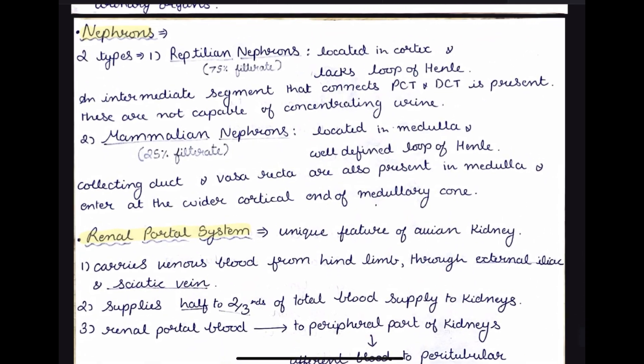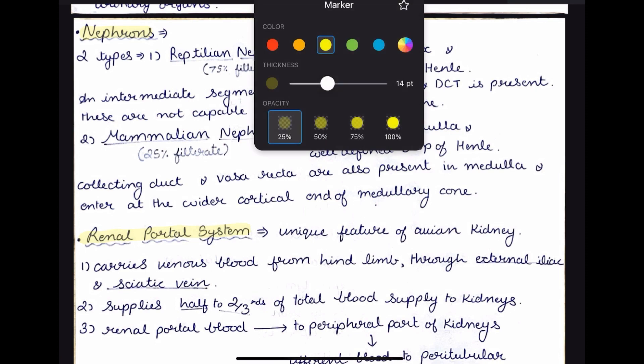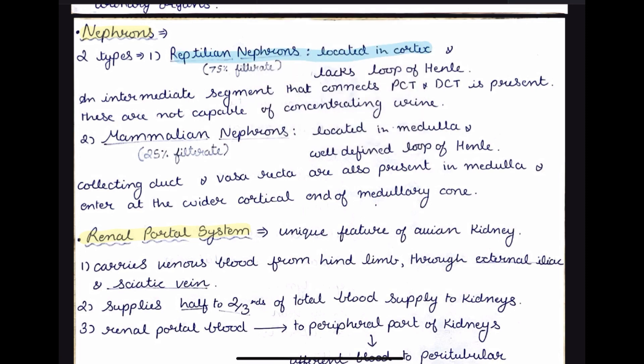There are two types of nephron in birds. The first is the reptilian type, which is responsible for 75% of the filtration. The second is the mammalian type, which is responsible for 25% of total filtration. Reptilian nephrons are located in the cortex. They lack loops of Henle; the intermediate segment connecting the proximal convoluted tubule and distal convoluted tubule is present, but these nephrons are not capable of concentrating urine.